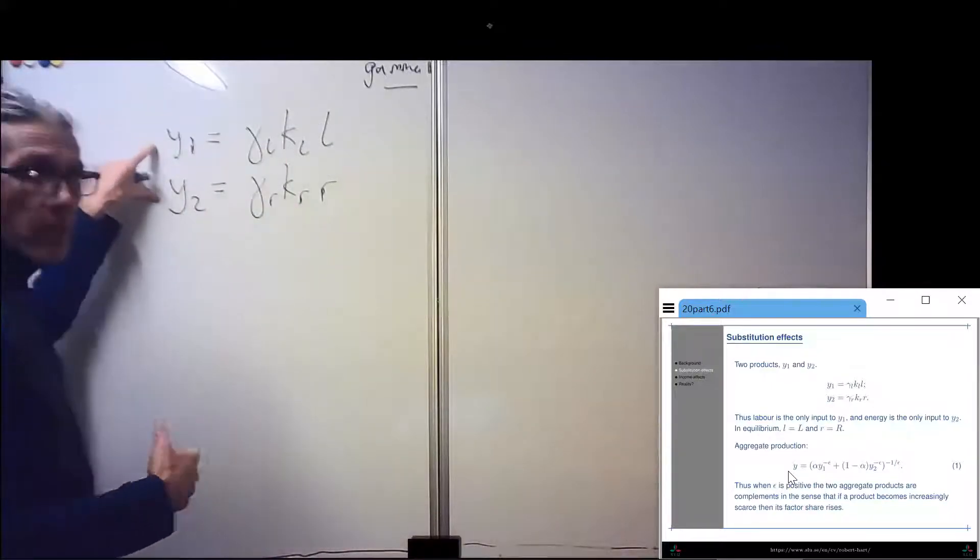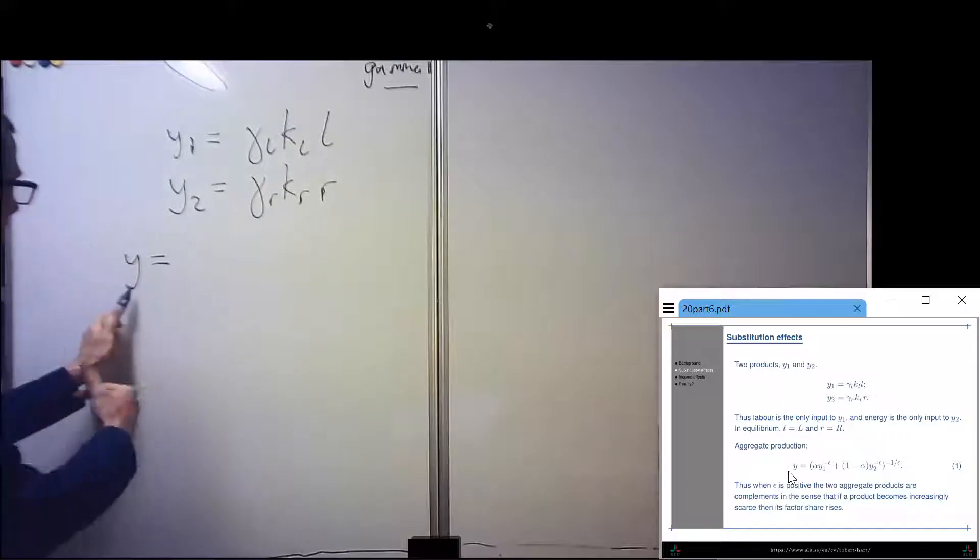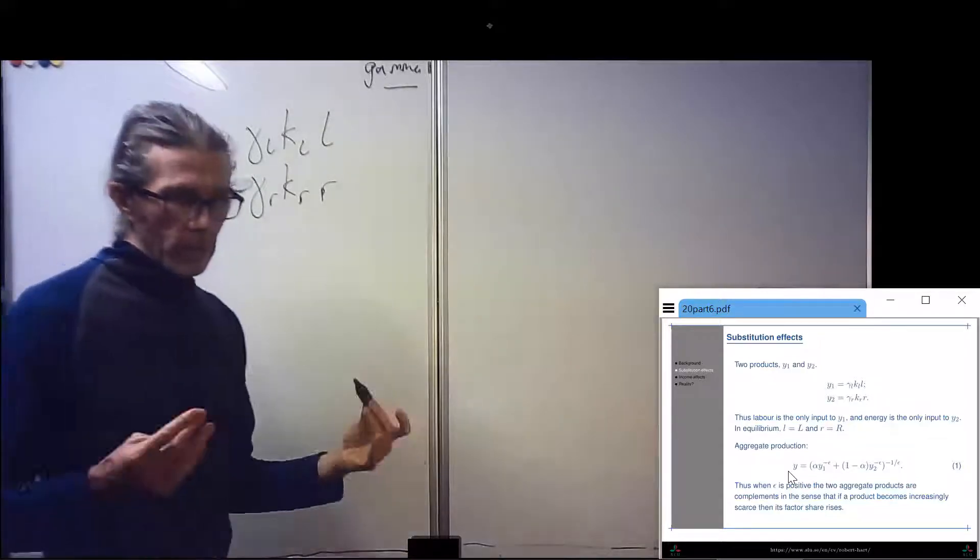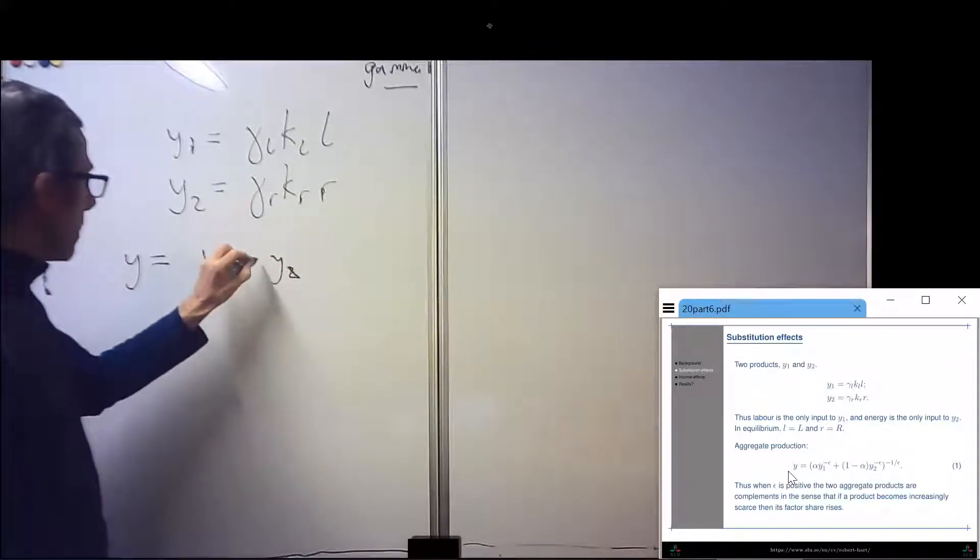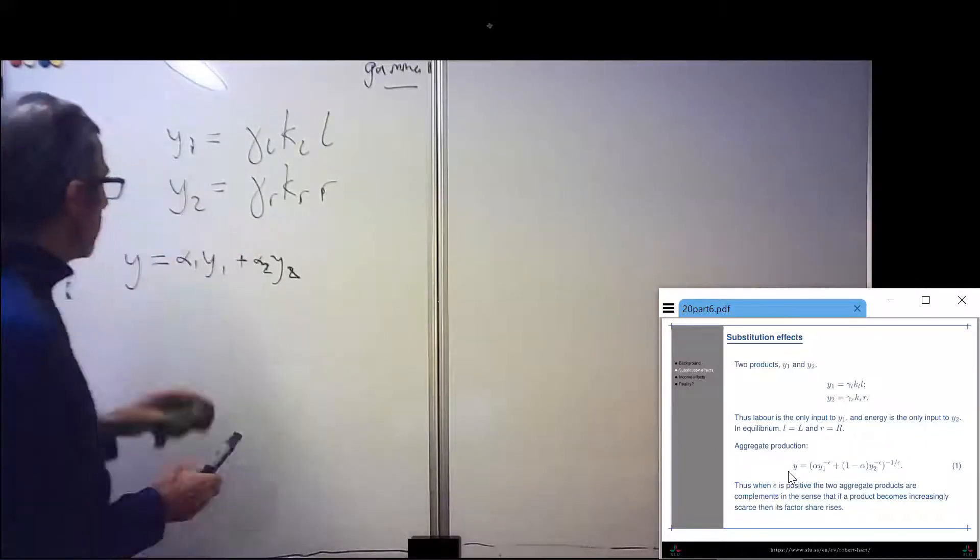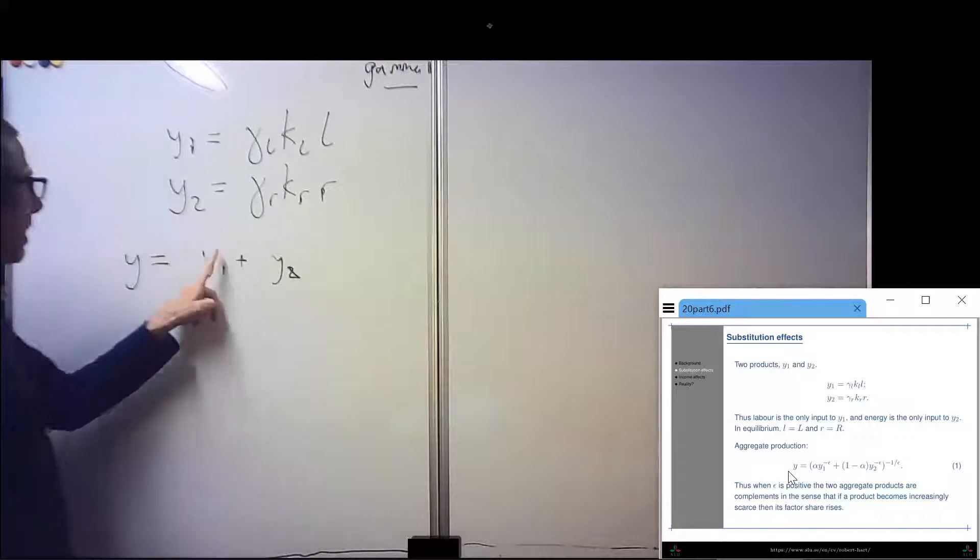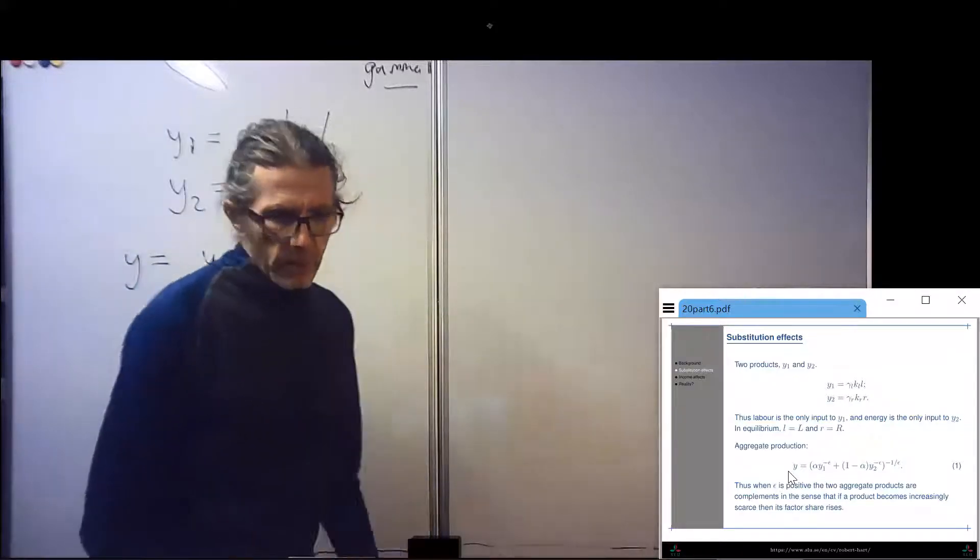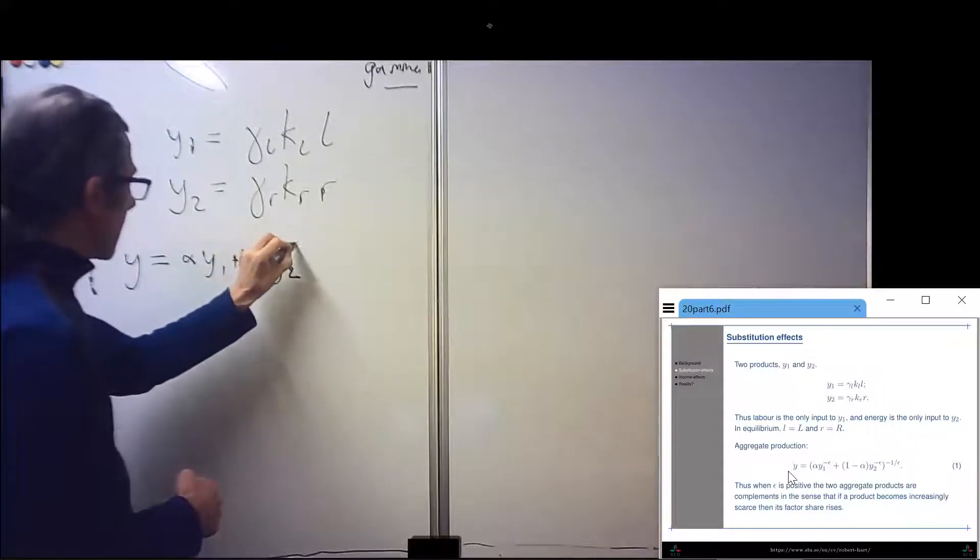How do consumers value these products against each other? We say that this aggregate production Y is a function of the quantities of Y1 and Y2. They're not perfect substitutes. If they were perfect substitutes, Y would just be Y1 plus Y2, potentially with some pre-multiplying numbers. But they're not perfect substitutes.